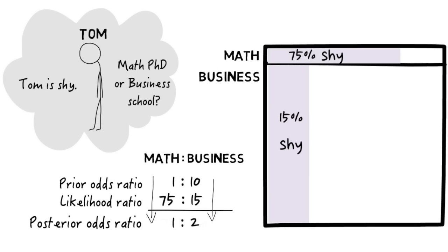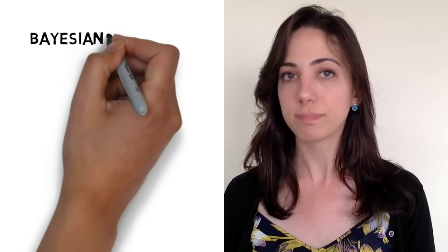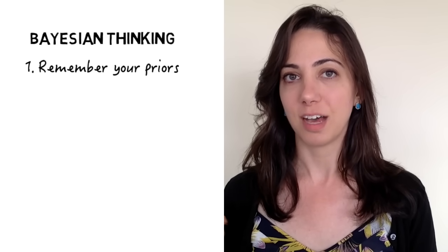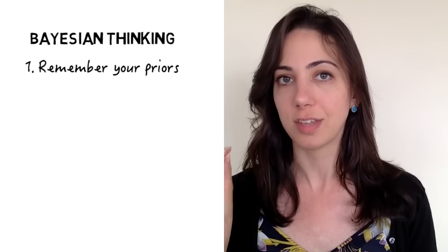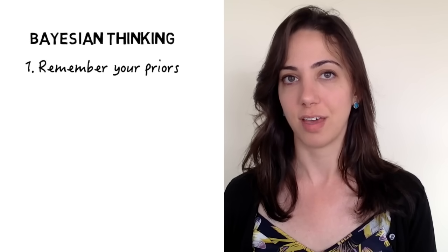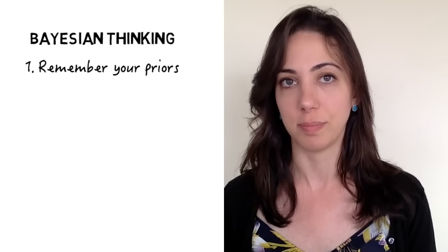Now I want to talk about how I use Bayes' rule in my everyday thinking. I don't plug numbers into a formula or draw these diagrams. But there are a few principles of thinking that fall out of the math of Bayes' rule that are really useful. Principle number one is: remember your priors. As you saw in the Tom example, what people naturally do is focus on the evidence and forget about the prior — the background knowledge that math is just much less common than business. This is called base rate neglect.